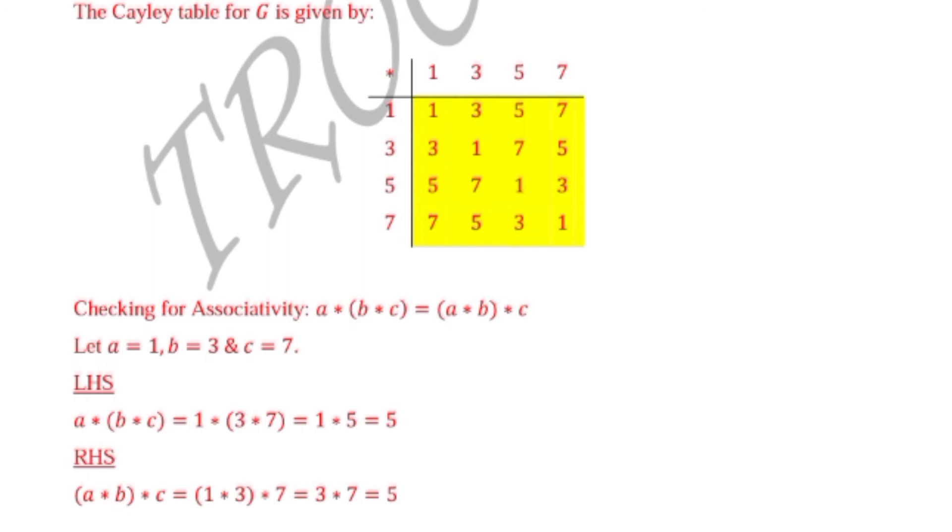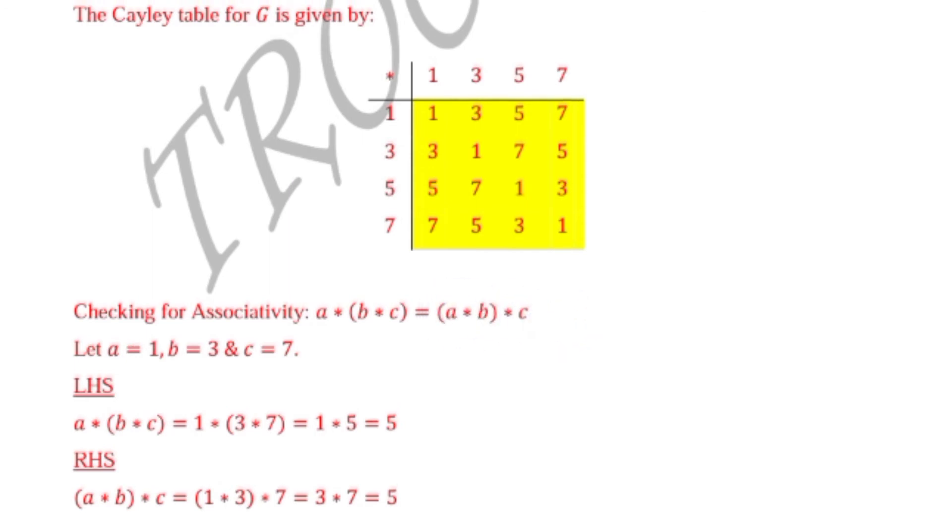Now for the right-hand side, (A star B) star C equals (1 star 3) star 7. We're using the same numbers to see if we get the same answer. In this case, we start with 1 star 3. From our Cayley table, 1 star 3 is 3. Therefore, we have 3 star 7, which from our Cayley table is 5.